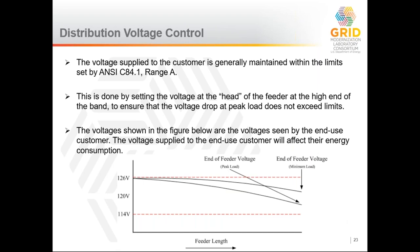An operational distribution system is almost always maintained within the Range A limits of ANSI. Traditionally, the voltage at the head of the distribution feeder — at the substation — is set at the high end of the ANSI band, typically around 125 volts, and then voltage tends to drop along the circuit due to loads. In a system where power flows from the substation to the end, this means a consistent voltage drop, but how much it drops varies over the course of the day. The figure shows two traces: end-of-feeder voltage at minimum load and at peak load, where the voltage is brought down significantly more at peak.